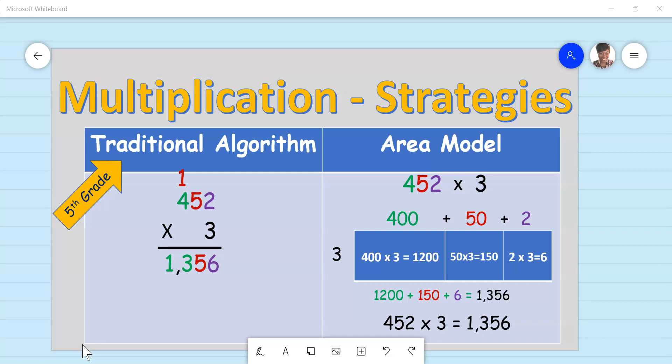However, according to Common Core, elementary age students won't be exposed to this strategy until they reach the fifth grade. So if your child is in third or fourth grade, they will be taught other strategies such as decomposing numbers, partial products, and our focus today, the area model.